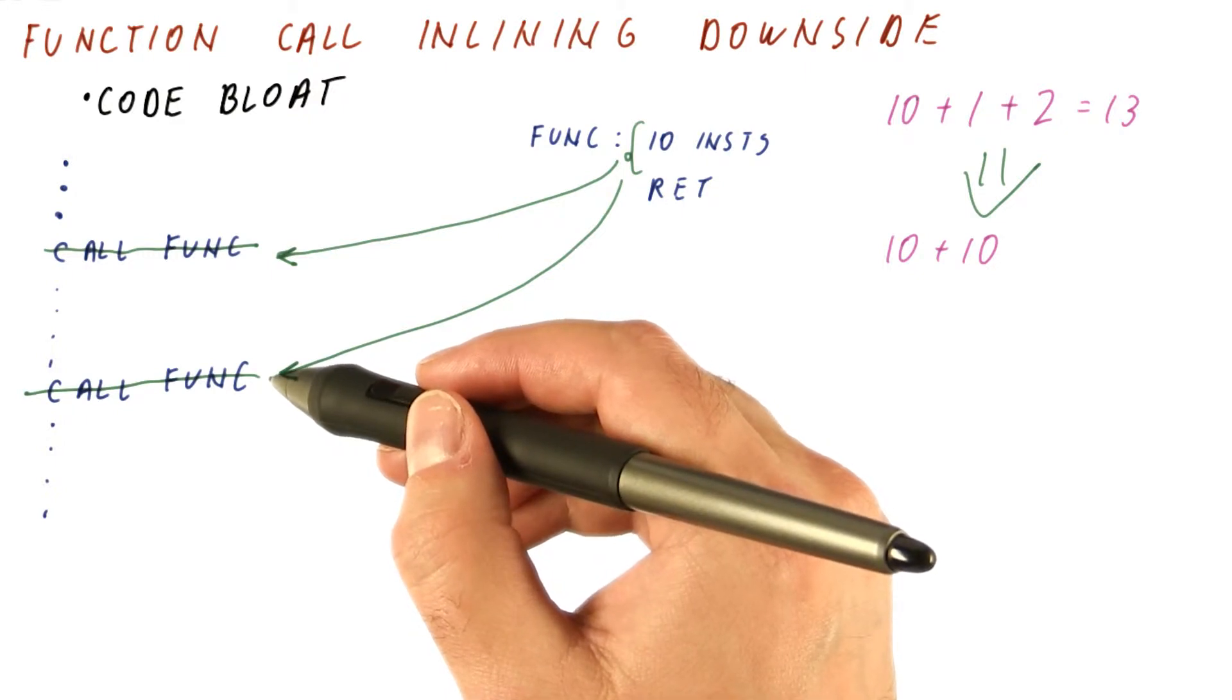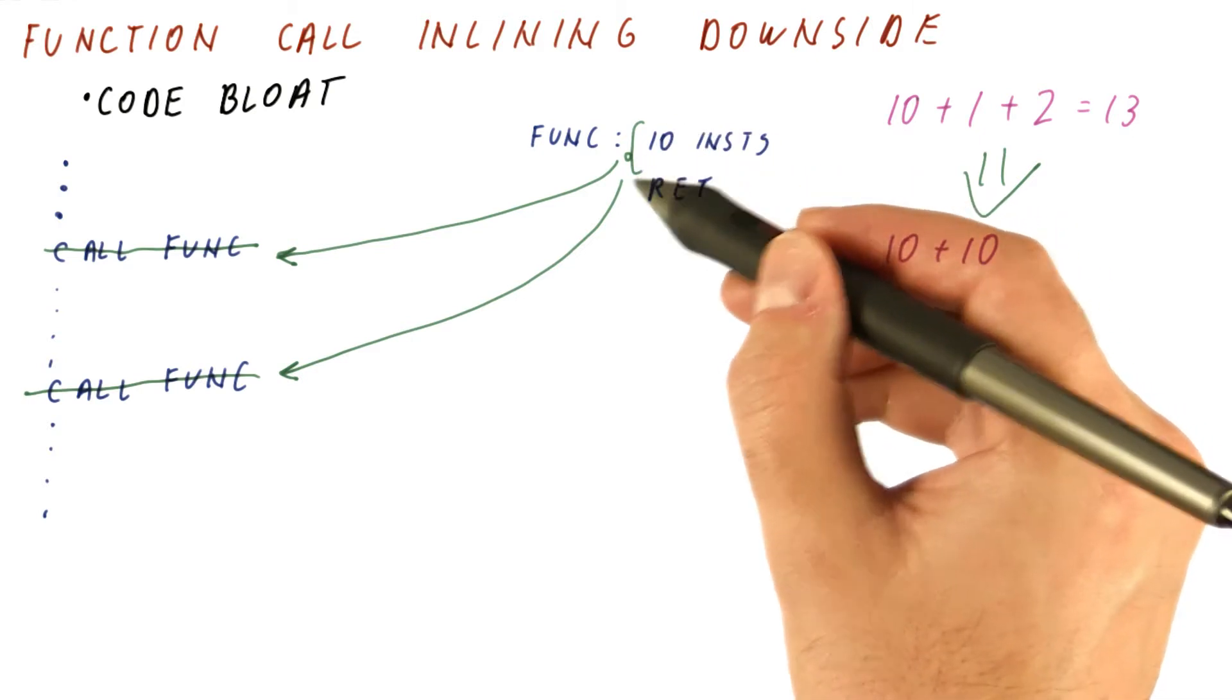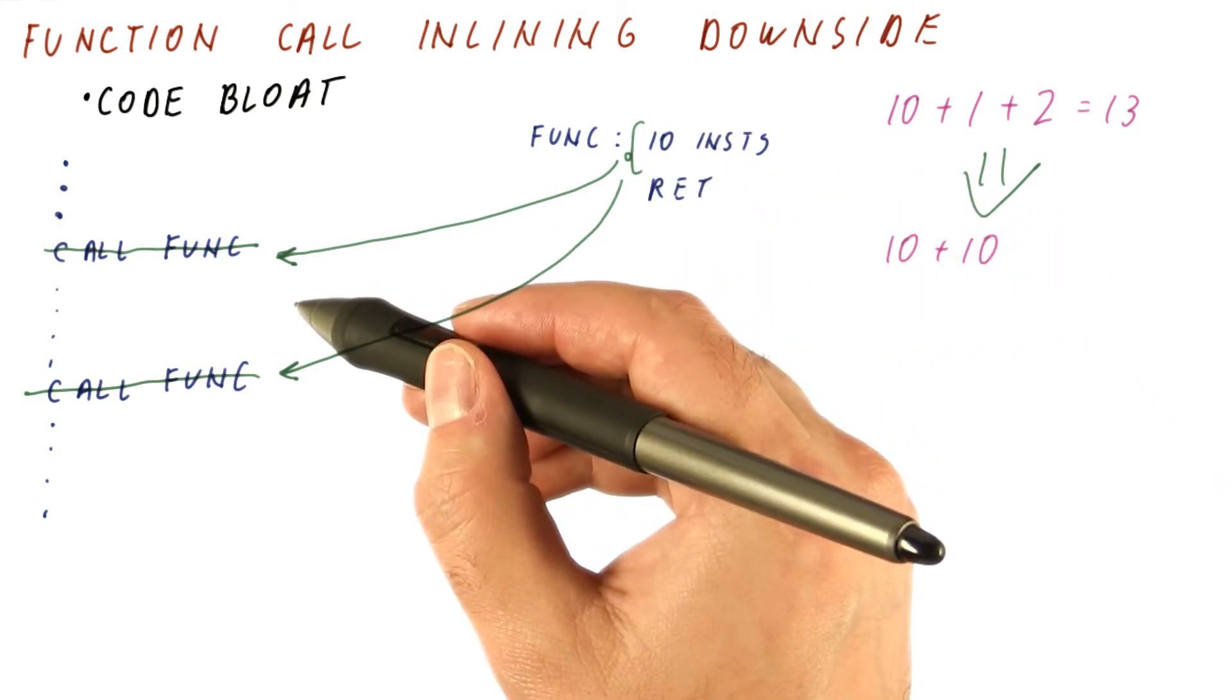Some functions are called from hundreds of places, which means that the body of the function will now be replicated many, many times.